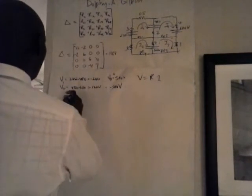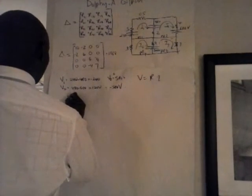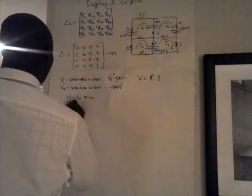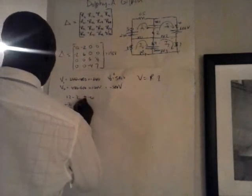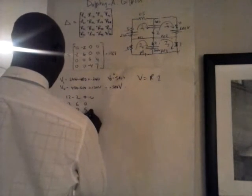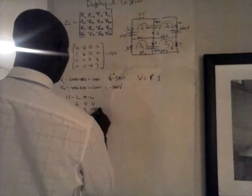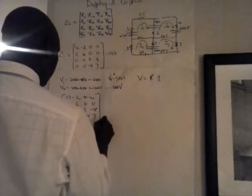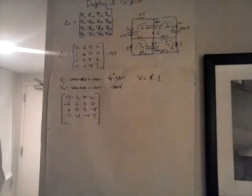So what we have to do now is that 12 minus 2, 0, 0, minus 2, 0, 0, 6, 0, 0, 0, 0, 5, minus 4, 0, minus 4, 7, which were putting this by inspection from a 4x4 mesh here.